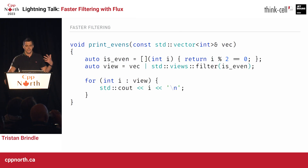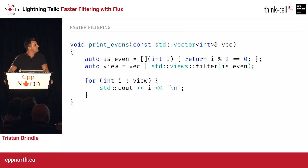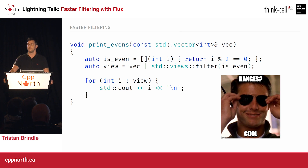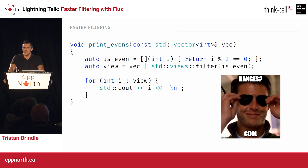This is C++20. It's all very nice, it's very cool. So we're taking our vector, piping it through a filter view, and then iterating over that filter view and printing out the filtered elements. The AI looks at this and says: ranges — that's cool. So let's double-check and make sure the AI is right, because I've heard they can make mistakes occasionally.